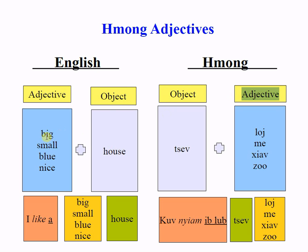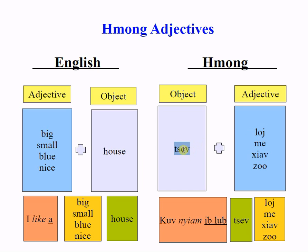So for example, 'big house' — big is the adjective, house is the object or noun. In Hmong, J is before law — house, big — that is 'J law.'